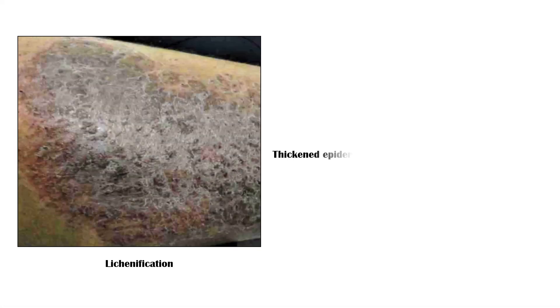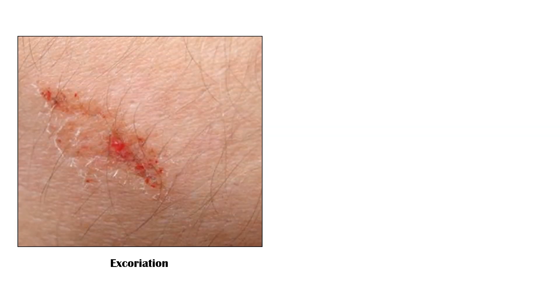In lichenification, the epidermis becomes thicker with normal prominent skin markings. Finally, an excoriation is a superficial skin abrasion, which is usually due to scratching.